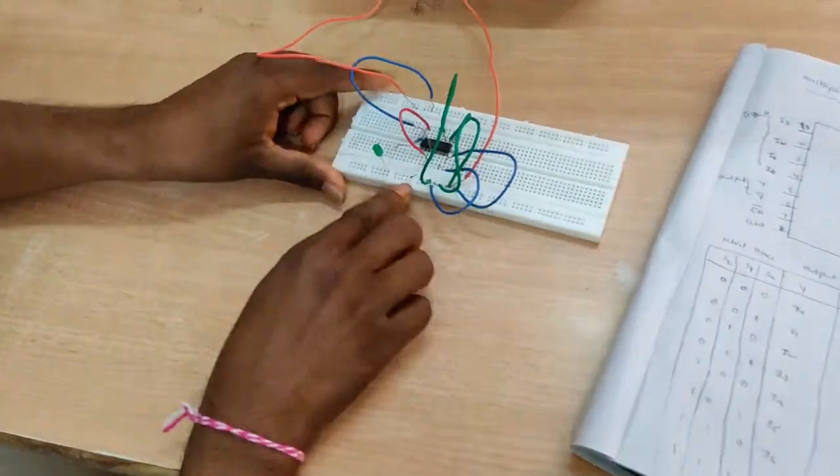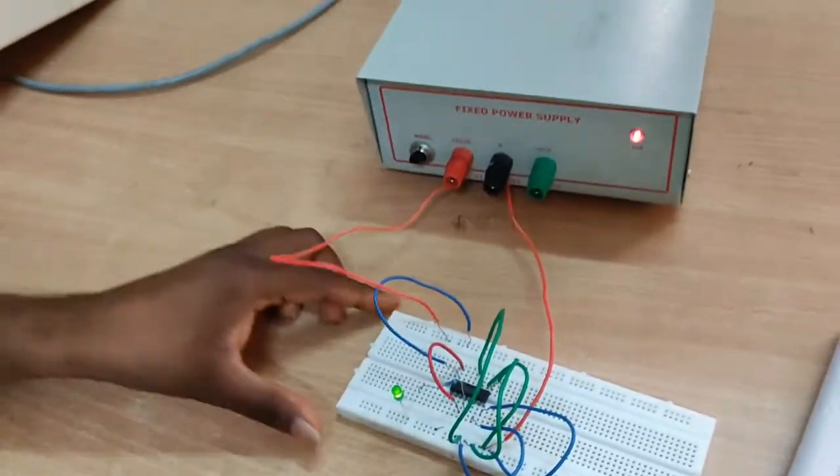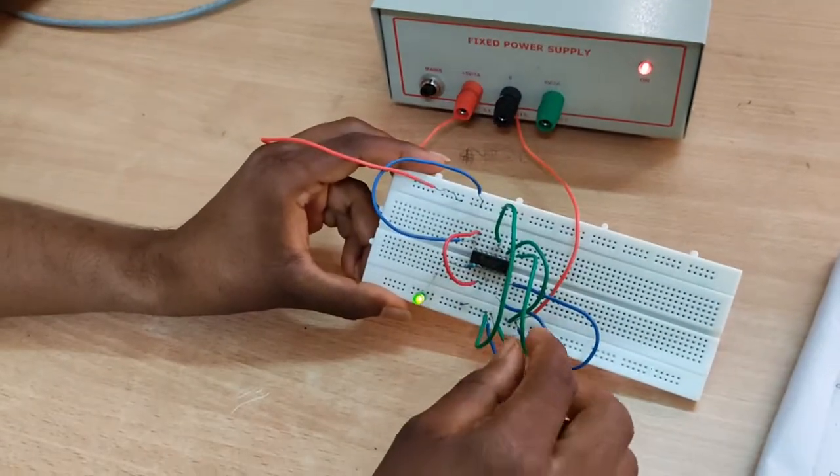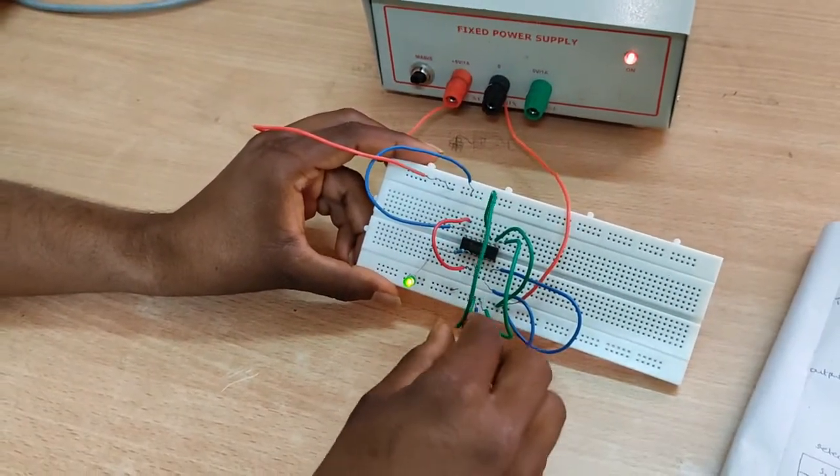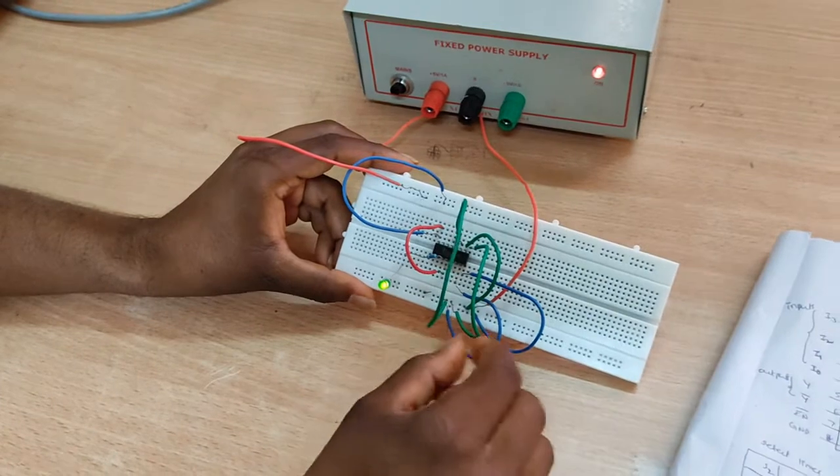So in this condition, now supply is on. So in this condition three selection lines are grounded: 0, 0, 0.